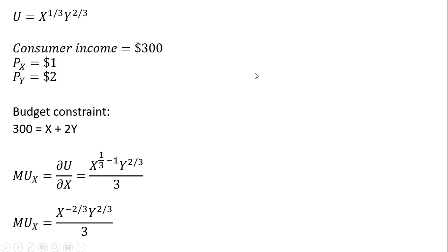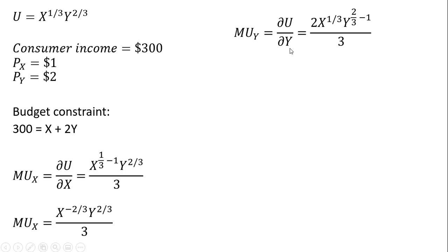To get the marginal utility of good Y, we take the partial derivative of the utility function with respect to good Y, holding good X constant. The exponent on the Y term comes down in front — that's where the 2/3 comes from.